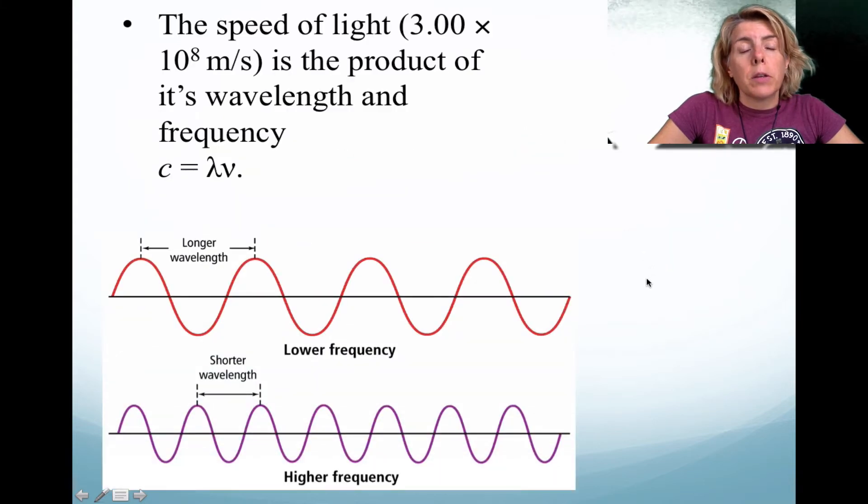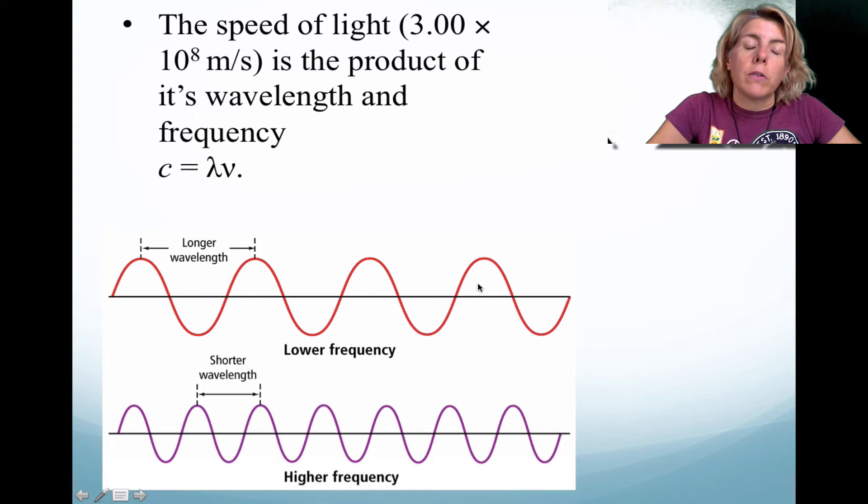Okay, speed of light, you've probably heard it before. It's 3.00 times 10 to the 8th meters per second. It's actually wavelength times frequency. Now what does this mean? All light travels at that speed. That's the maximum. That's the speed limit of the universe. Now notice that some types of light will have longer wavelength, or lower frequency, and other types of light will have higher frequency, shorter wavelength.